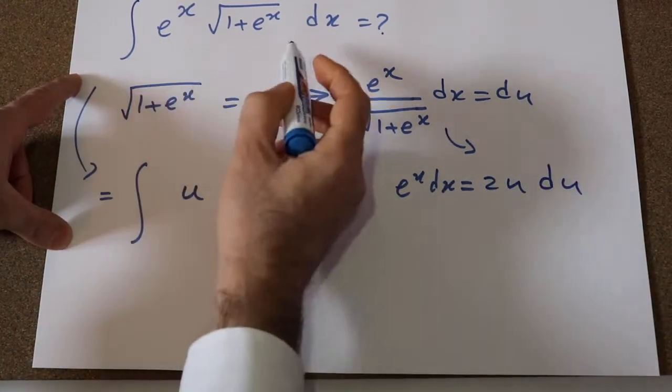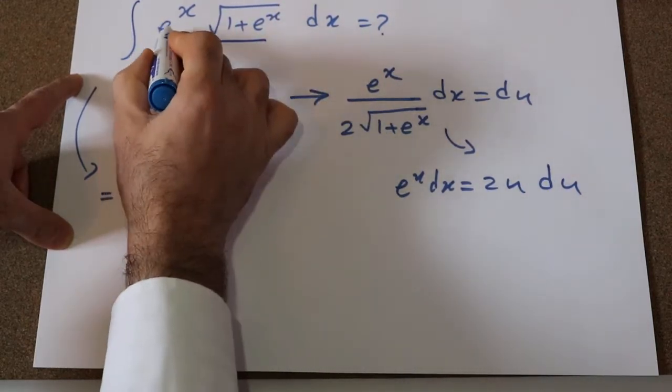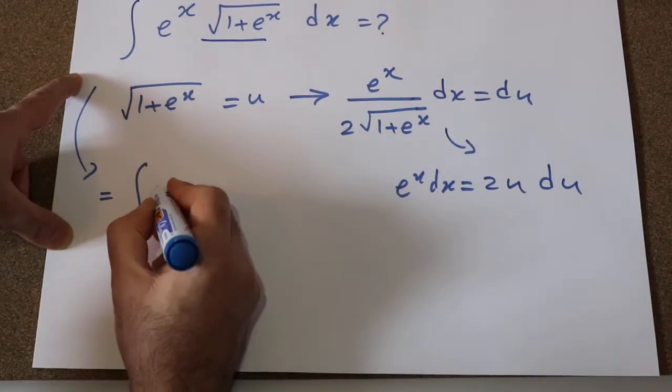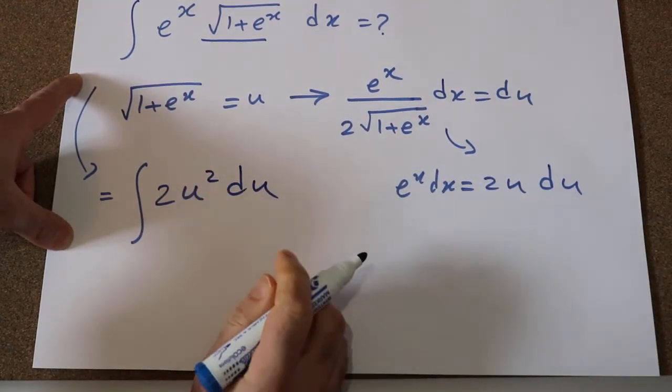So this integral, as I've already said, square root of 1 plus e^x is u, instead of e^x dx, I simply write 2u du. u times u will be u² du.